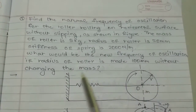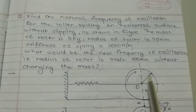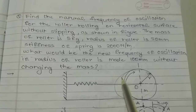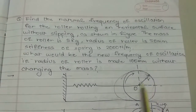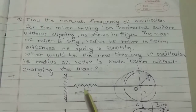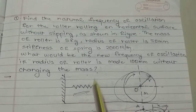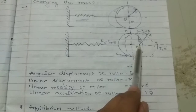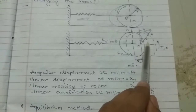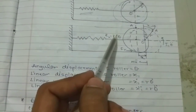Now, what would be the new frequency of oscillation if the radius of roller is made 100 mm without changing the mass? So here we have a horizontal surface, we have a roller, the radius of the roller is 50 millimeters, and the stiffness of this spring is 2000 Newton per meter. In the second case we increase the diameter of the roller to 100 mm without changing the mass.